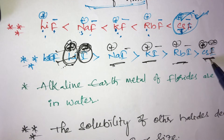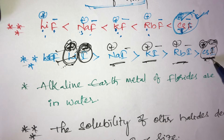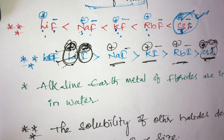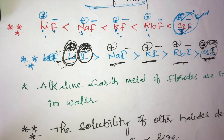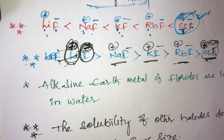Cesium iodide is the least soluble in water because both cesium and iodine are large size — both anion and cation are large. This is a very important concept: if cationic size is large and anionic size is small, or if cationic size is small and anionic size is large, the compound is highly soluble in water.